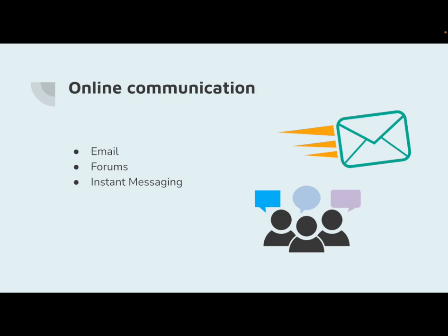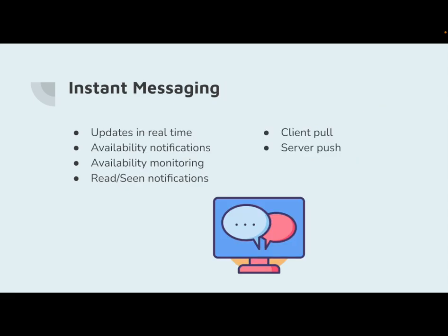One of the most common ways to communicate today is through instant messaging. It is a form of text-based communication in which two or more people engage in a single conversation via computers or mobile devices in an online chat room. In its simplest form, instant messaging seeks to accomplish two goals: availability monitoring and messaging. When a user logs in, the login is recognized and other online users receive notifications of that user's presence. The software establishes a direct connection between users so they can communicate in real time. The main types of instant messaging implementation are client-pull and server-push.